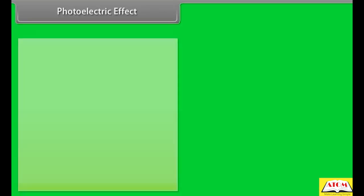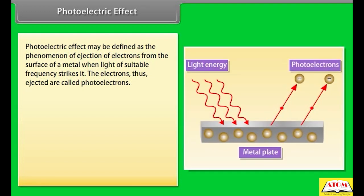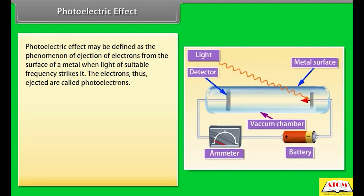Photoelectric effect: It may be defined as the phenomenon of ejection of electrons from the surface of a metal when light of suitable frequency strikes it. The electrons thus ejected are called photoelectrons. When light of a particular frequency strikes the metal surface, electrons are ejected from the metal surface and detected by a detector.